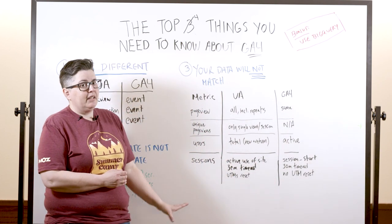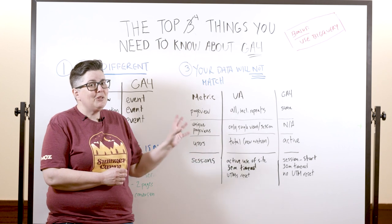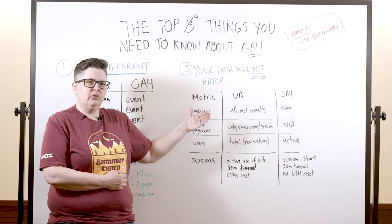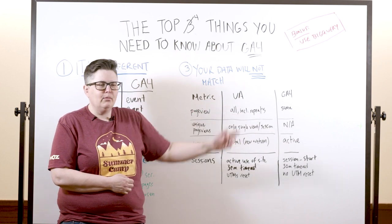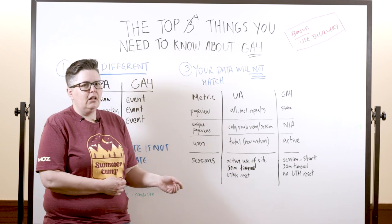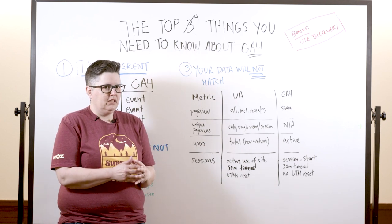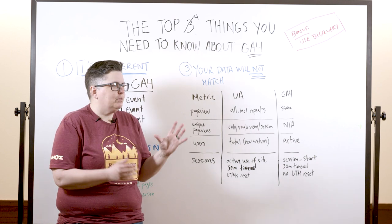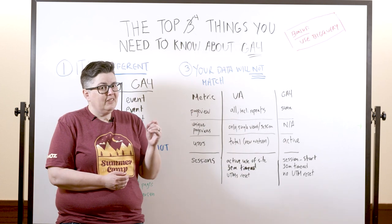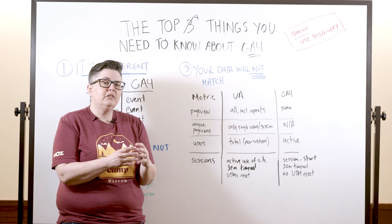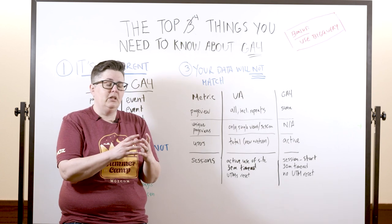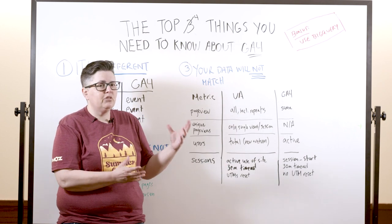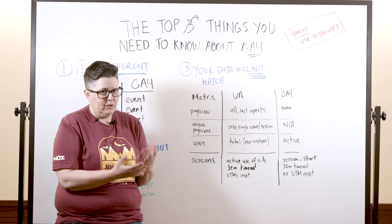Next thing: your data is not going to match. This is stressful because you've been reporting on UA data for years, and now all of a sudden it's not going to match. If you have that kind of dialogue with your leadership, you really need to have a conversation about the idea of accuracy in analytics — as in, it isn't. The data is going to be different, and sometimes it's a lot different. It's because GA4 measures stuff differently than UA did. There's a page on Google Analytics Help that goes into it in depth, but here are the highlights.